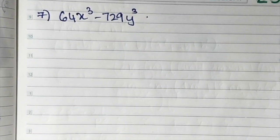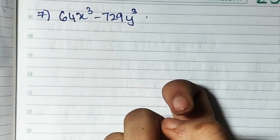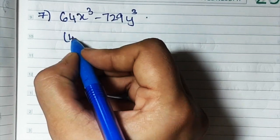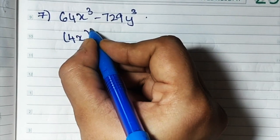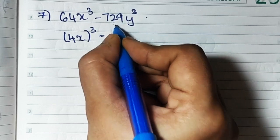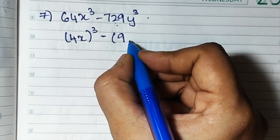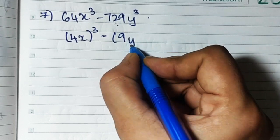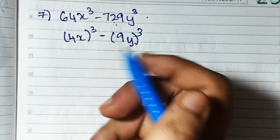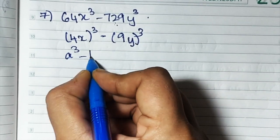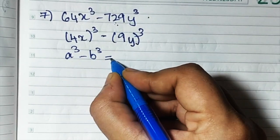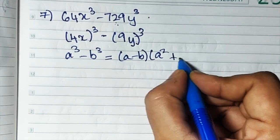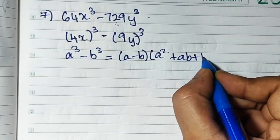Now I'll do sum number 7: 64x cube minus 729y cube. For 64, the cube root is 4, so we write (4x) cube. And 729 is the cube of 9, so we write (9y) cube. The pattern is done. The formula is a cube minus b cube equals a minus b times a square plus ab plus b square.